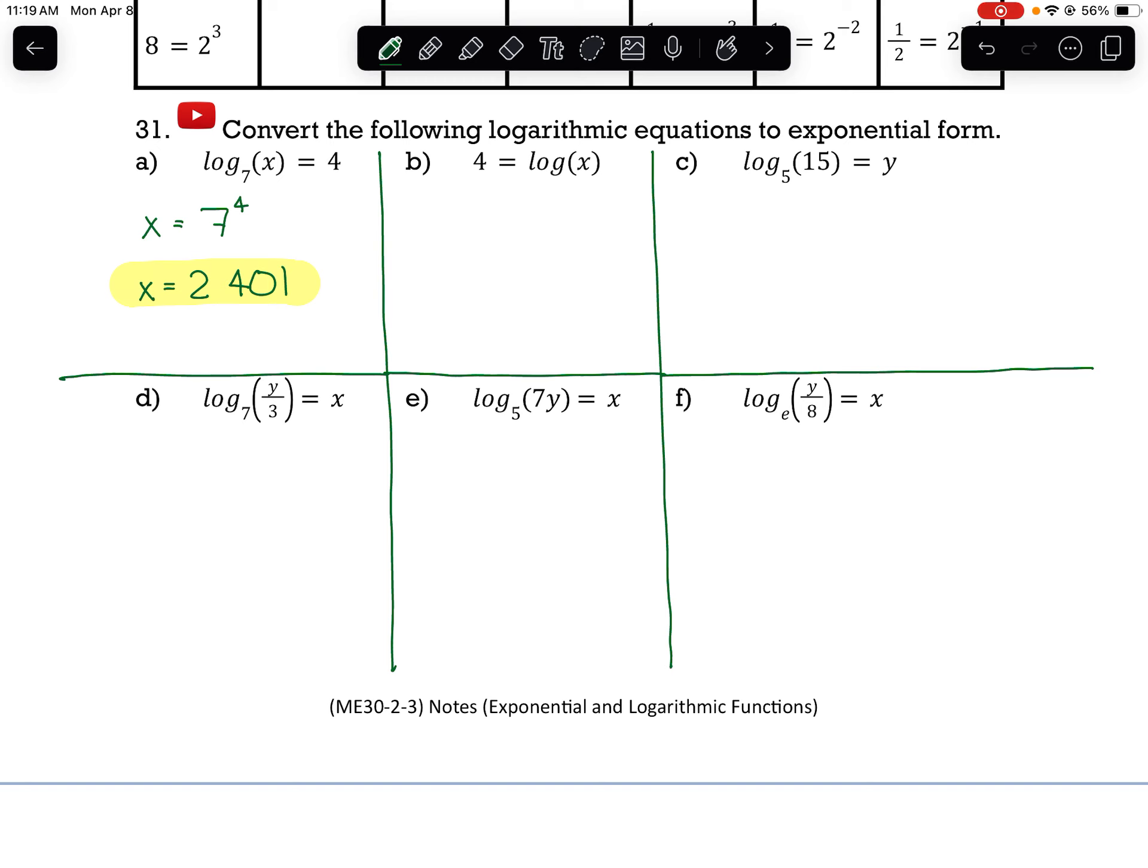For the next one here, we have 4 equals log of x. And so if we just see log and there's no base written, we're going to assume that it's a base of 10. And so that gives us the base for our exponential form, the exponent's 4,